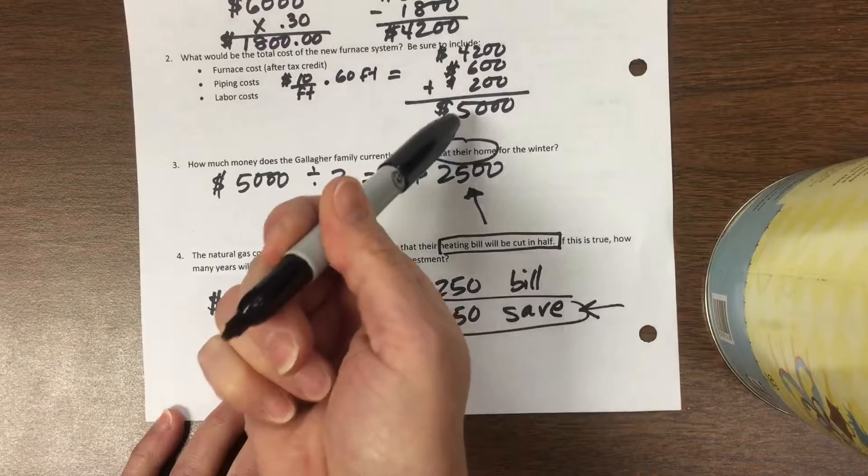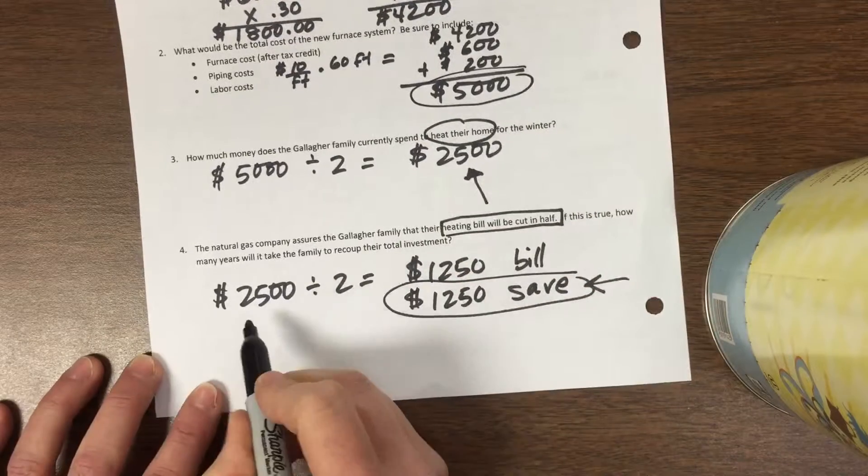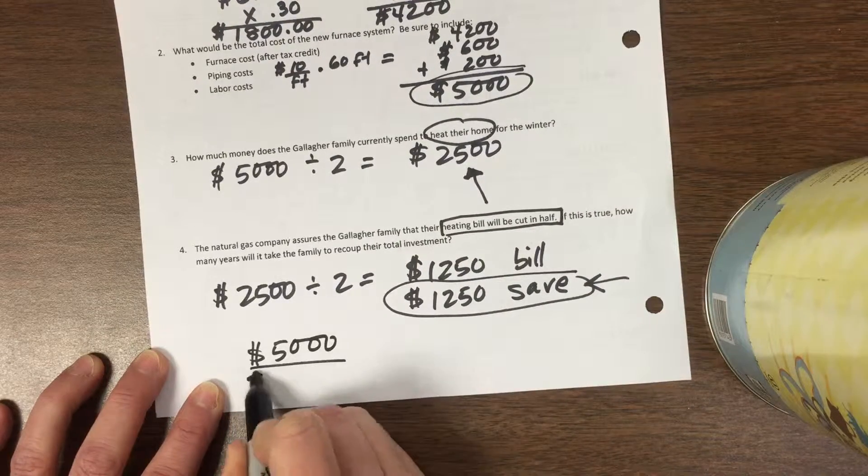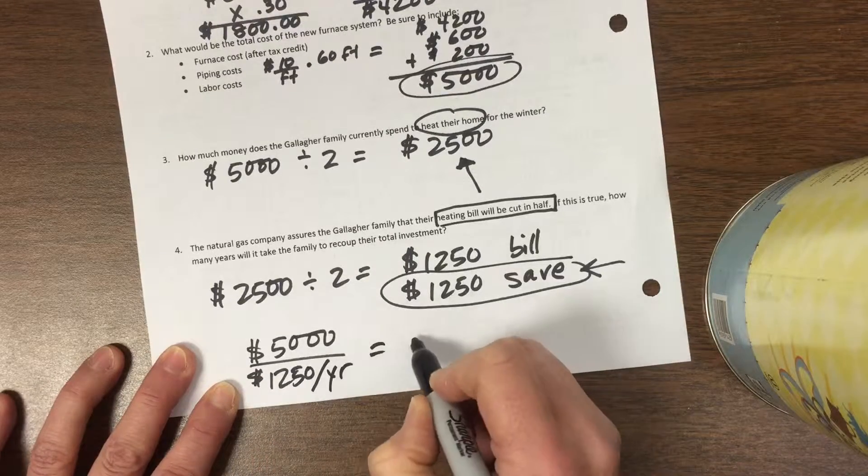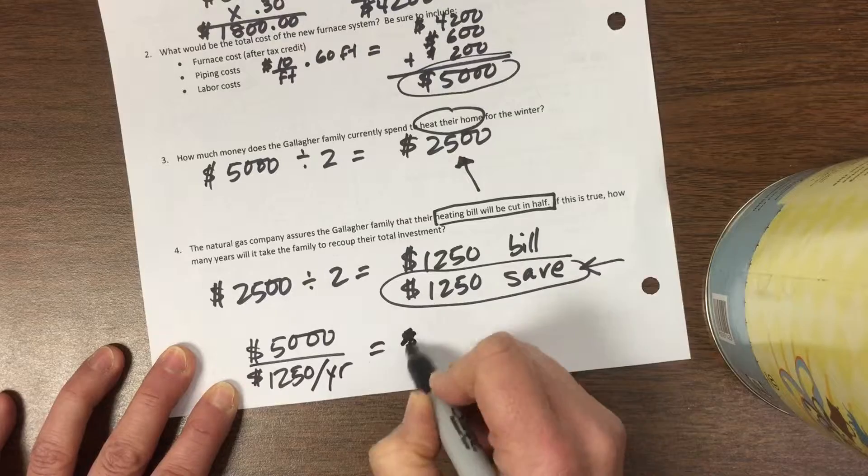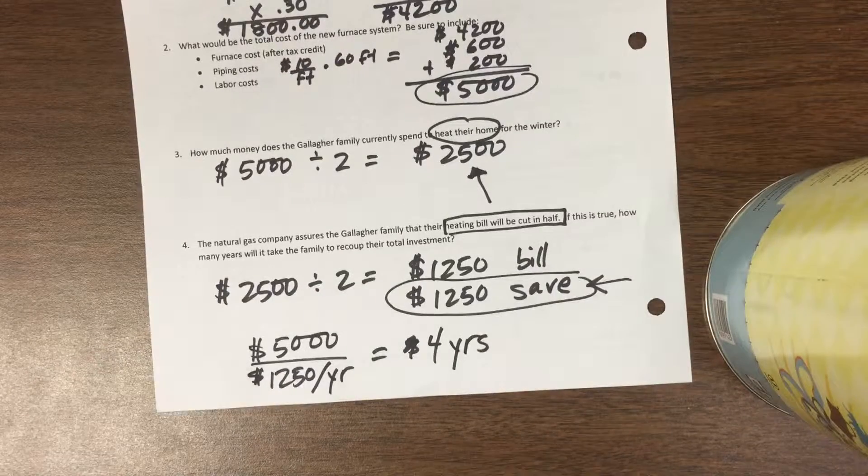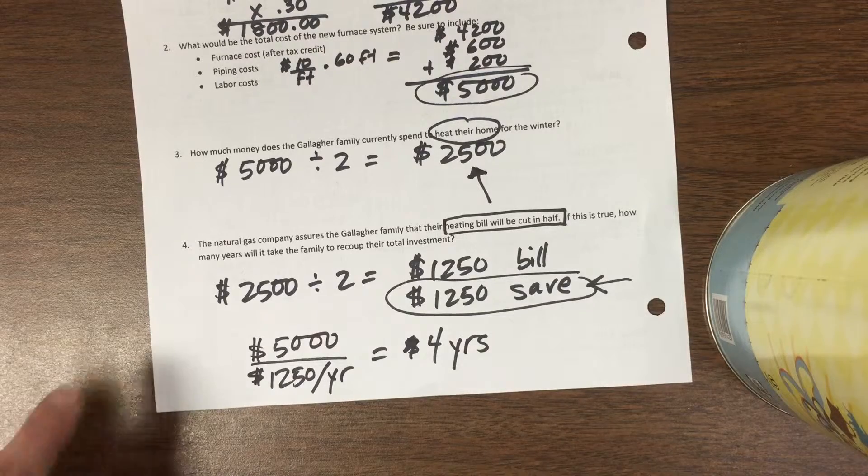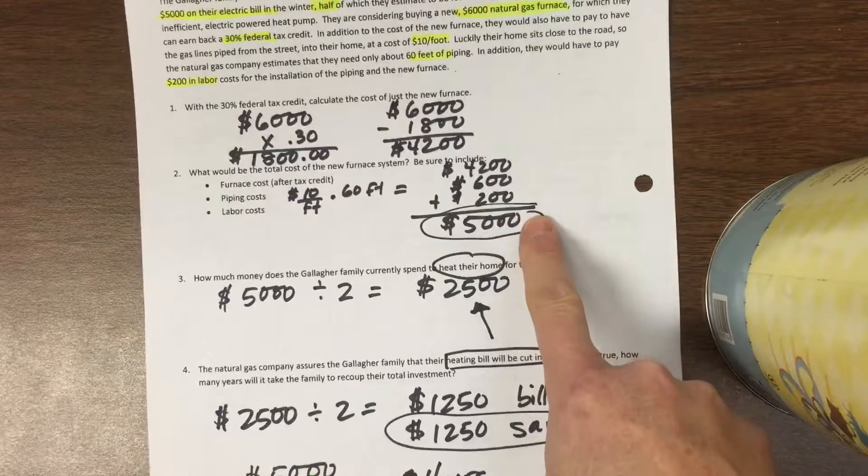Their $5,000 investment, saving $1,250 per year, comes out to 4 years. So they'll get their money back in 4 years. They should definitely do it—furnace will last 20 years. They won't do it though if they don't have the $5,000 in the first place.